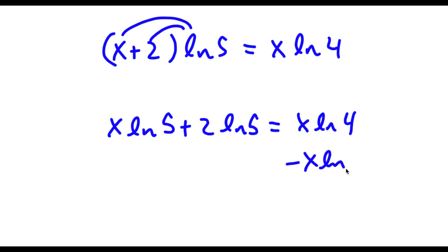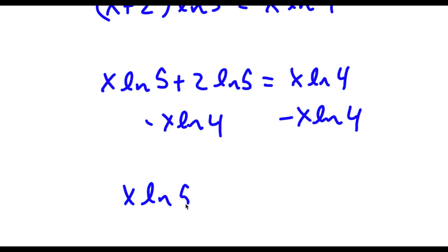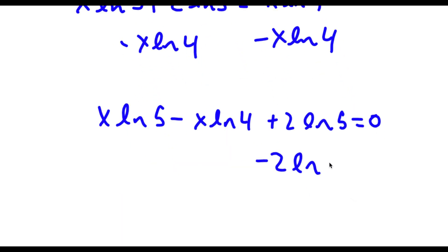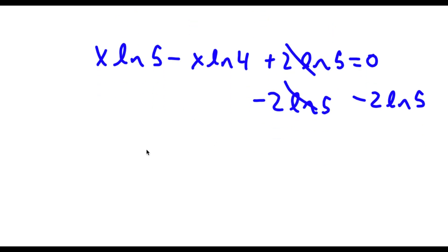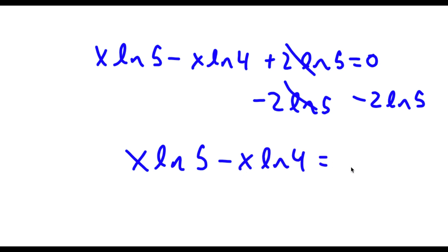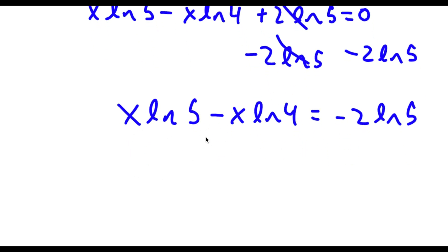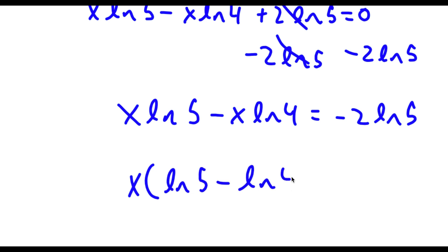Now I'm going to subtract x times ln 4 from both sides. So now I have x times ln 5 minus x times ln 4 plus 2 times ln 5 is equal to 0. If I subtract 2 times ln 5 on both sides, these two cancel out, leaving x times ln 5 minus x times ln 4 is equal to negative 2 times ln 5. Now if I factor out x, I get x times (ln 5 minus ln 4) is equal to negative 2 times ln 5.